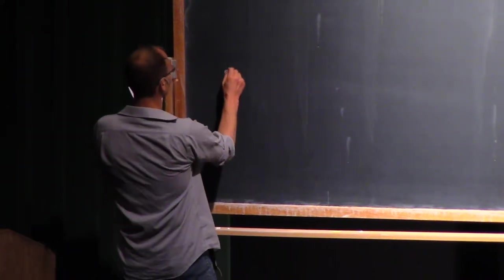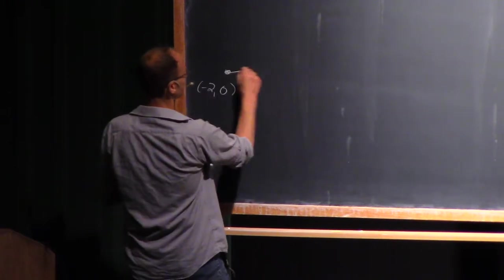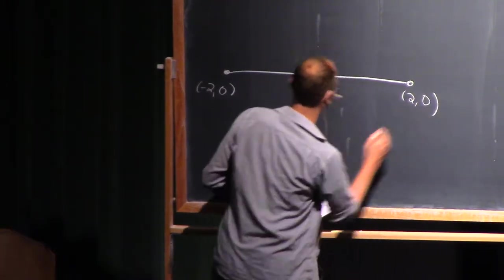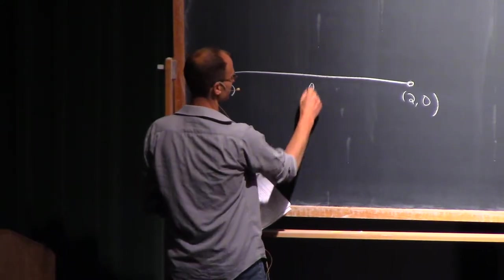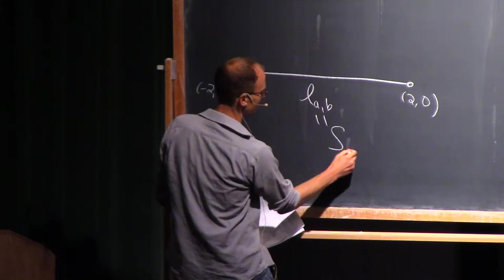We had this nice little construction where we had our two points that we started with, and we had an interval. And we called this guy LAB, so there's a line segment from A to B. And we called this particular guy S naught.